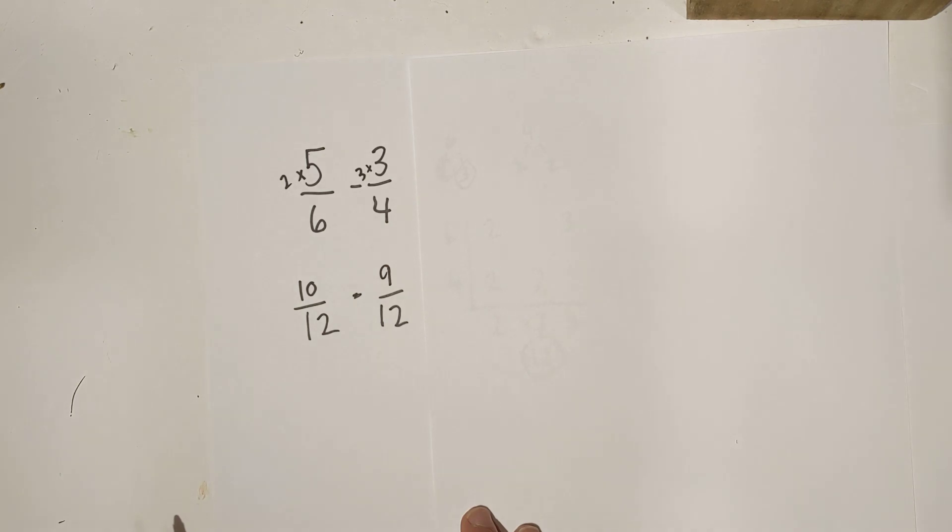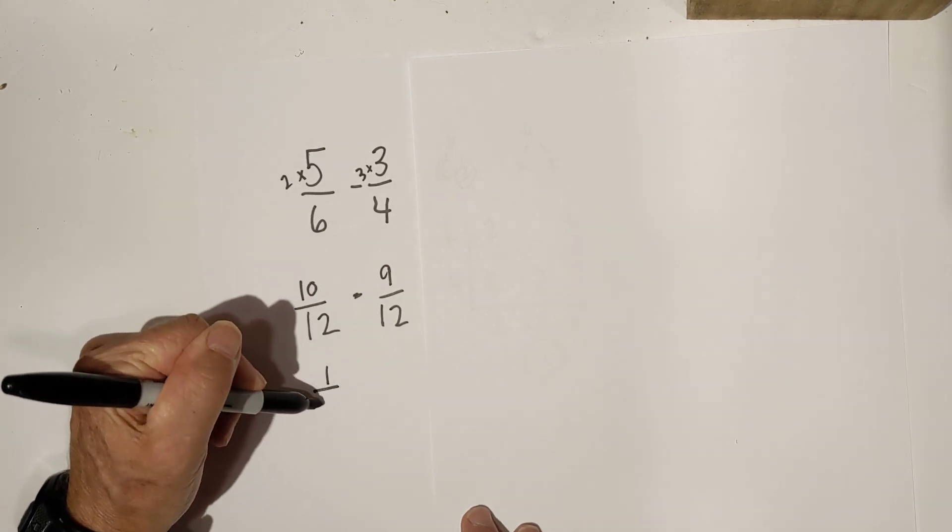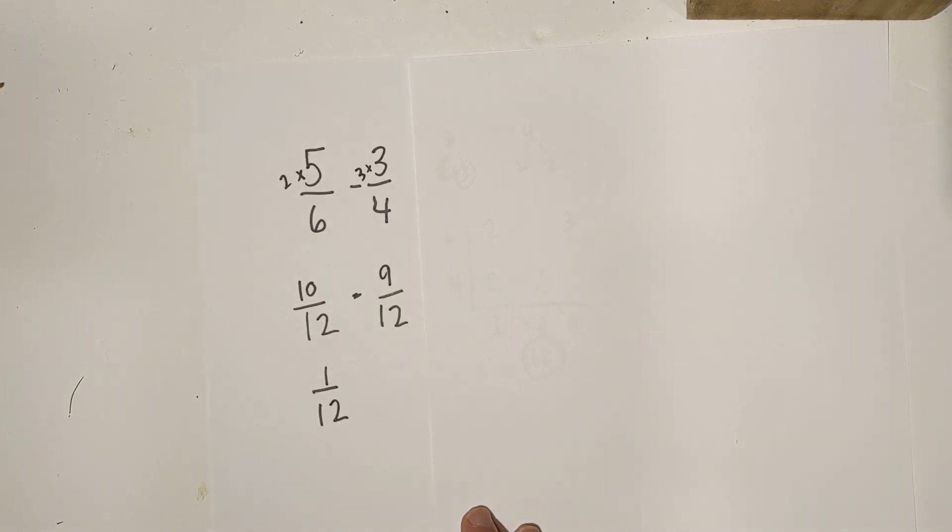And we're going to subtract these. And 10 minus 9 is 1/12. And that is reduced and simplified.